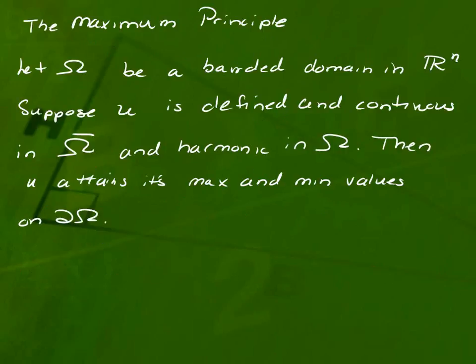The maximum principle comes from the mean value theorem. It can be proved using the mean value theorem. If I have a bounded domain in R^n, and u is defined and continuous in the closed set on the boundary as well, and it's harmonic inside omega, so that means u satisfies Laplace's equation, then it's going to attain its maximum and minimum values on the boundary. You recall something like this in calc 1, when you had to find maxes and mins on a closed interval. They either were attained somewhere at a critical point inside an interval or at the boundary.